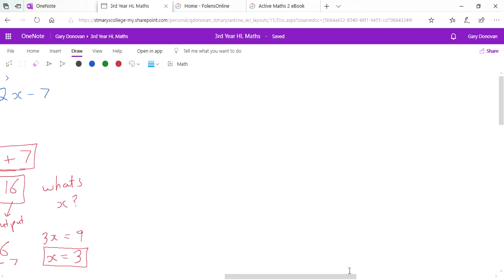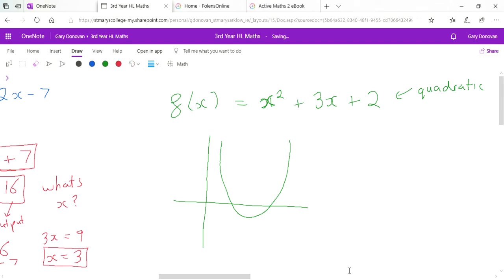The last thing in the introduction is there are different types of functions. We talked about a linear function, but we also have functions that might look like x squared plus 3x plus 2. This would be a quadratic function. When we graph quadratic functions, they look something like a U-shape, or they might look like this.